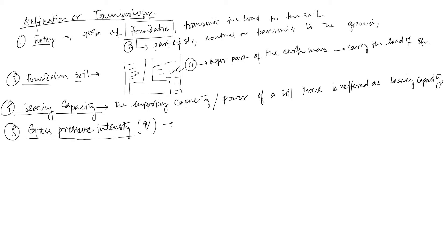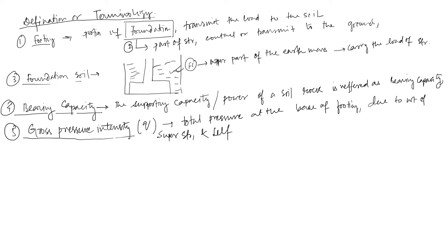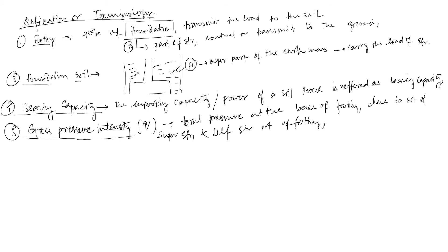Now we will talk about gross pressure intensity. This is the total pressure at the base of the footing, and it comes due to the weight of the superstructure, the self-weight of the footing, and overburden.